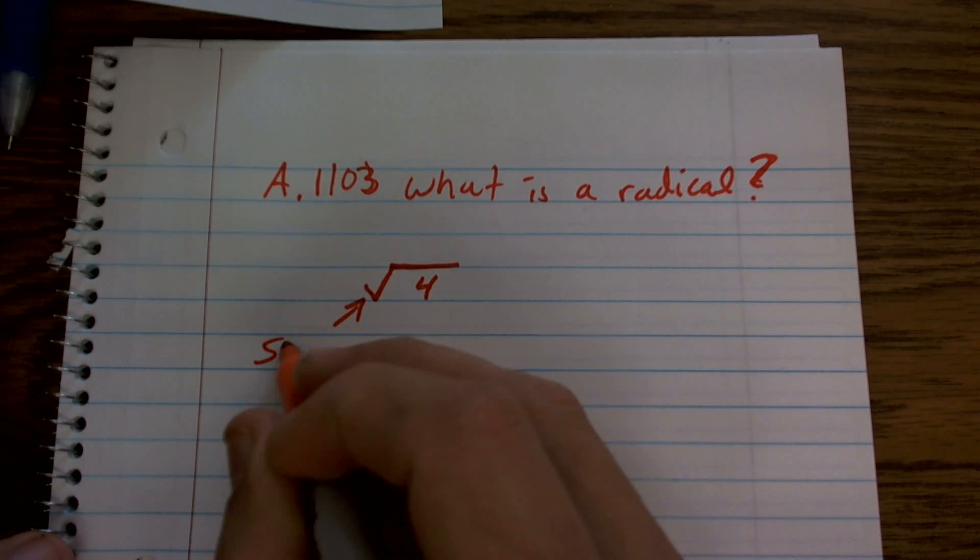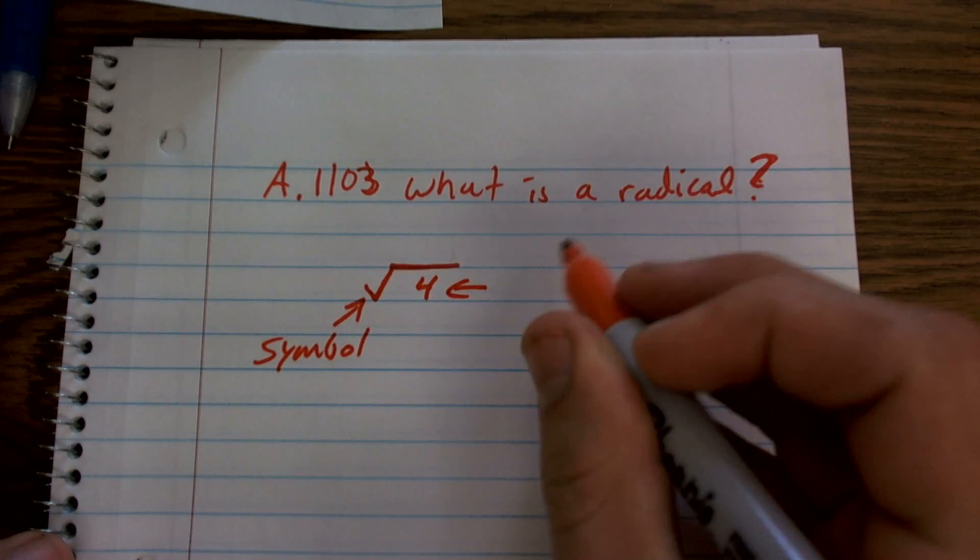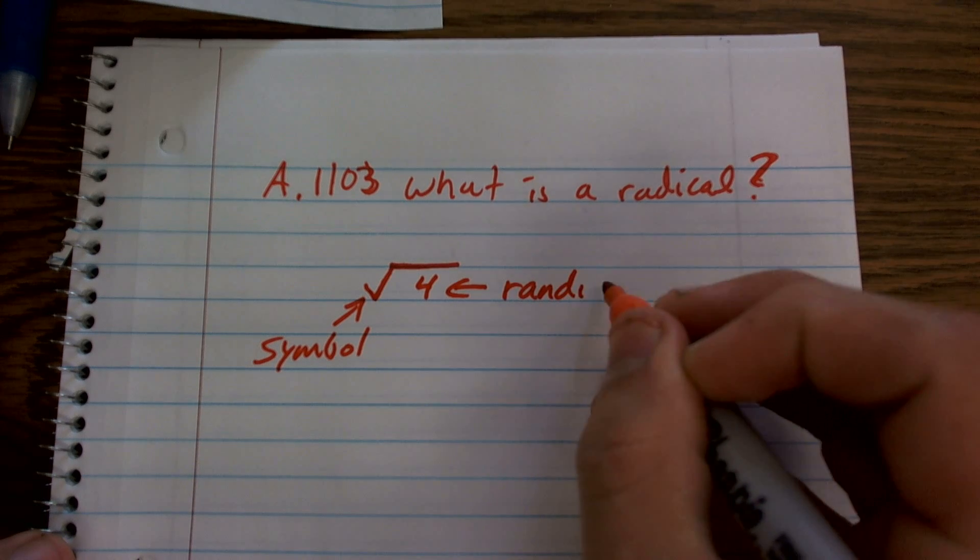So here we're going to call our symbol, and the number under is what we're going to call the radicand.